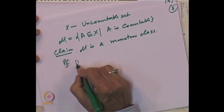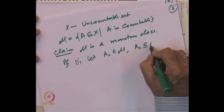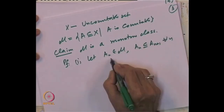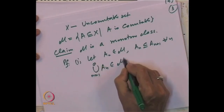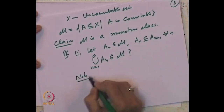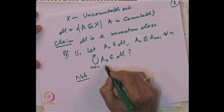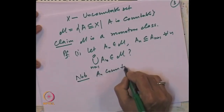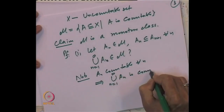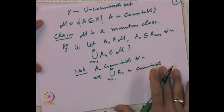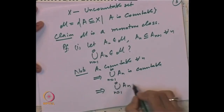To prove M is a monotone class, for the first property: take a sequence A_n belonging to M with A_n increasing. We have to check that the union of A_n from n=1 to infinity also belongs to M, i.e., it is a countable set. Since each A_n is countable, the countable union of countable sets is again countable. Hence the union of A_n belongs to M.